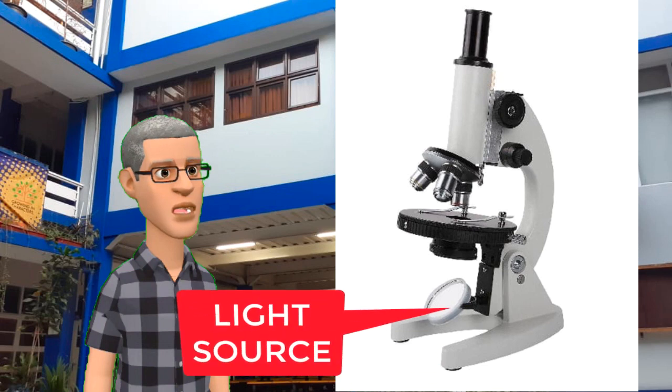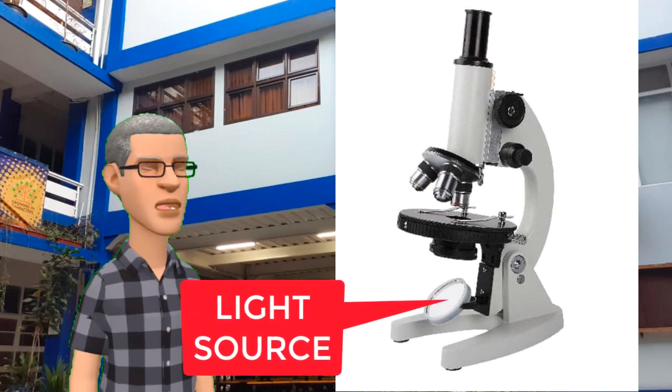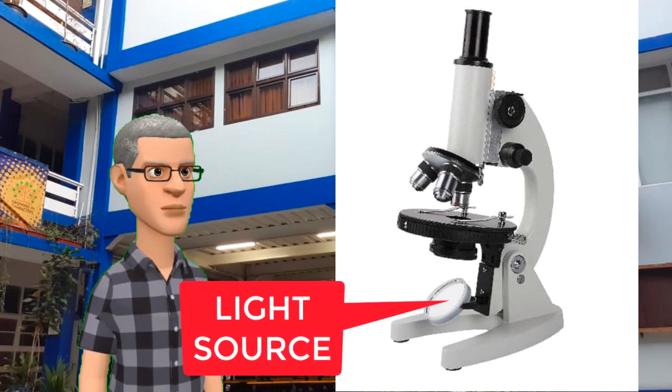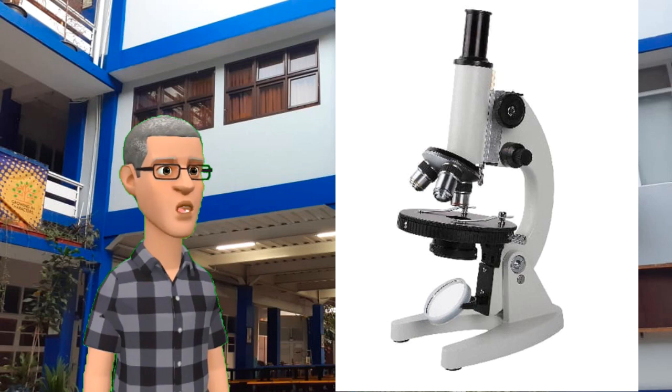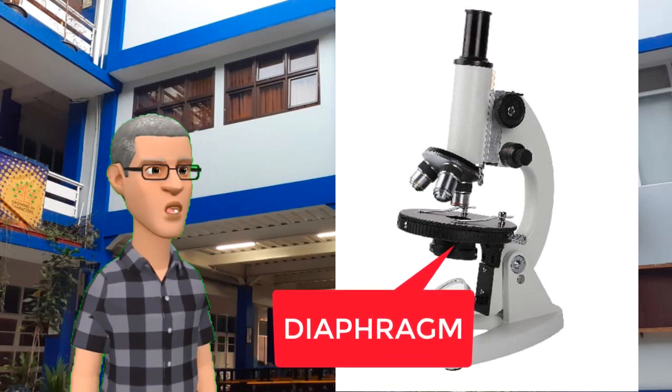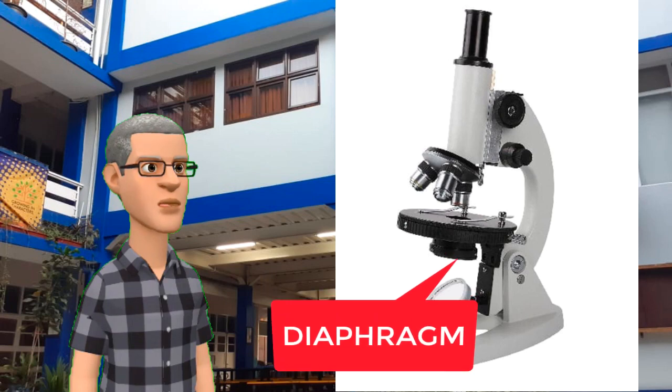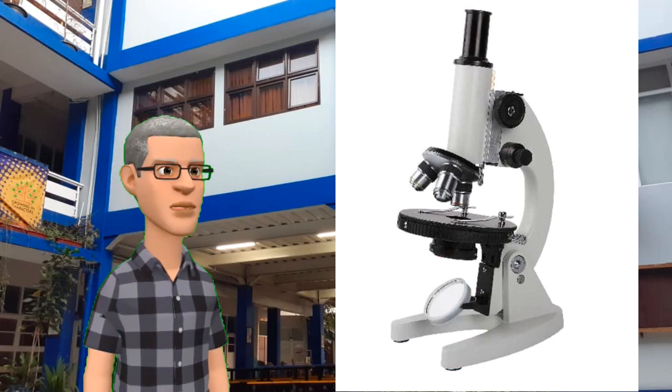Then we got the light source. This could be a mirror or a lamp. The light will be directed through the diaphragm which will control how much light can pass through and illuminate the object so that it can be observed.